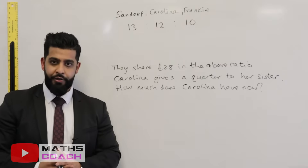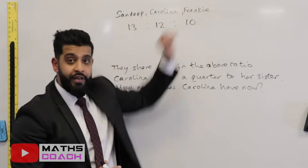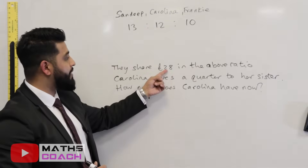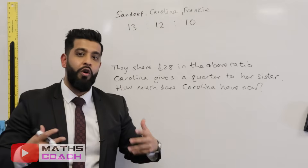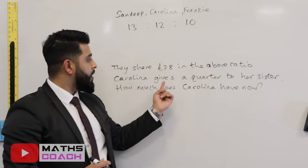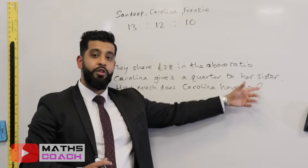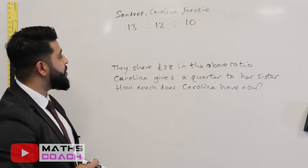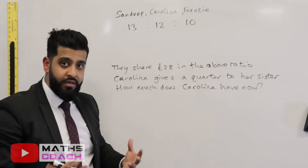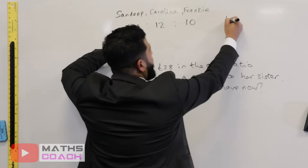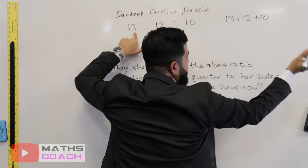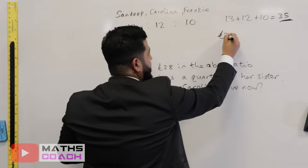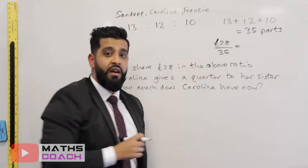In this next question we look at a three-part ratio. Sandeep, Carolina and Frankie are aged 13, 12 and 10 years old and they are sharing 28 pounds in the ratio of their ages. Carolina gives a quarter of her money to her sister — we want to know how much Carolina has now. First, add up the parts: 13 plus 12...